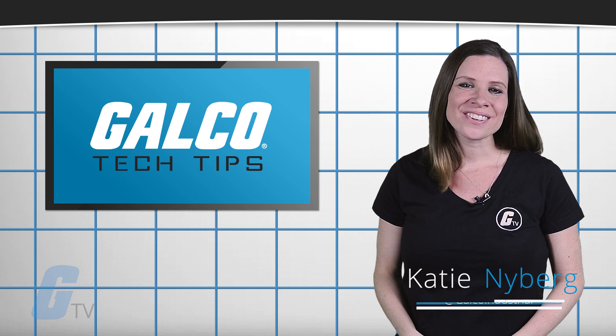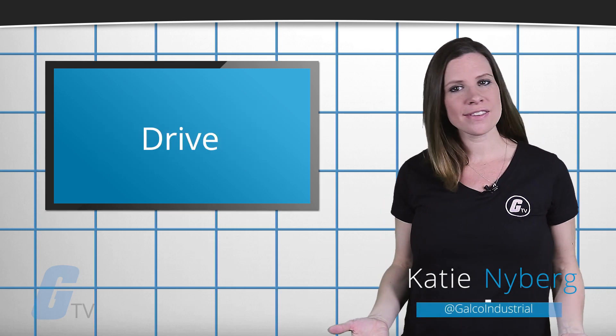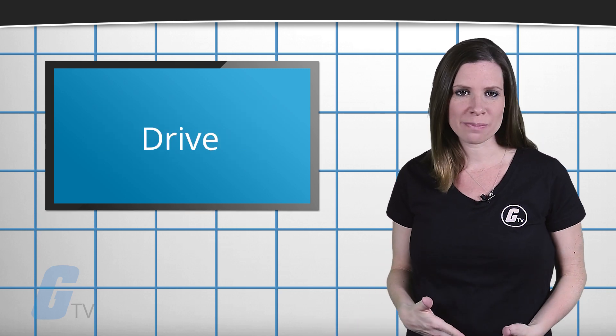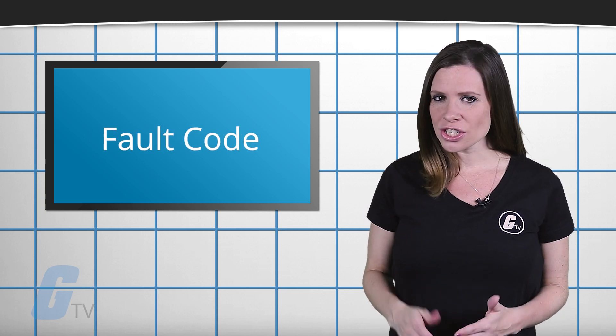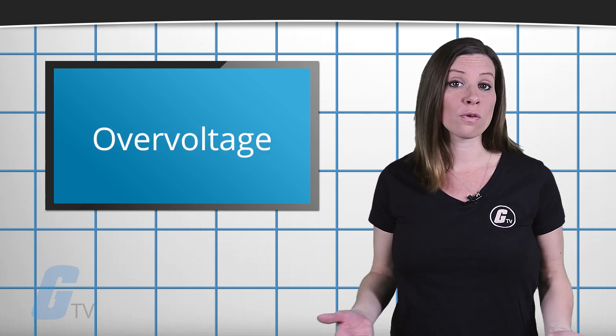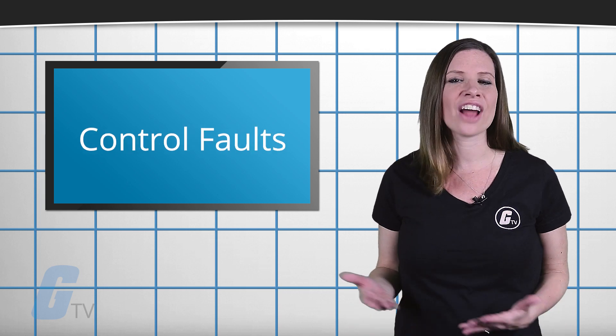Hey, Katie here with your GalcoTV Tech Tip. If your drive is unable to reach full speed before tripping and displays a different fault code each time, such as codes for over voltage, control faults, and under voltage, what do you do?